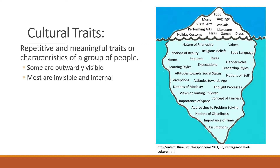Before we begin talking about pop and folk culture individually, we need to look at cultural traits as a whole. A cultural trait is a repetitive or meaningful trait, characteristic, or action of a group of people. Some are outwardly visible, but most are internal or not outwardly visible. We use the metaphor of an iceberg. As shown in the image on the right-hand side, everything on the very top — food, music, language, dress styles, performing arts, holidays and customs — all of those cultural traits are things that are outwardly visible.